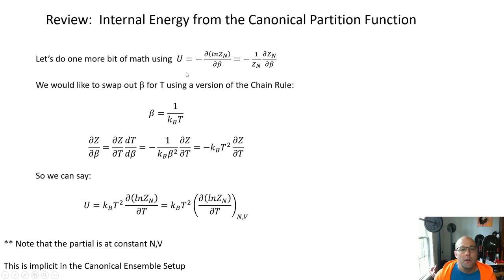So there's one more bit of math we want to do. We've got this expression for U as a derivative with respect to beta. A lot of times we'd rather have things in terms of temperature than beta. Beta is nice in the partition function because it lets us not have a bunch of fractions inside our Boltzmann factor exponentials. But a lot of times we would like a formula in terms of temperature, something we think we understand and can measure.